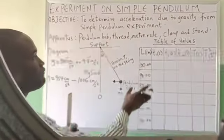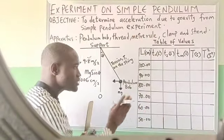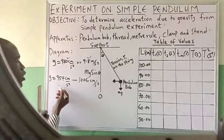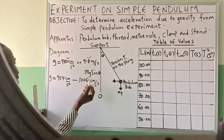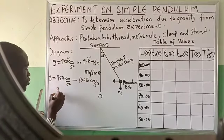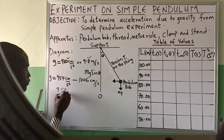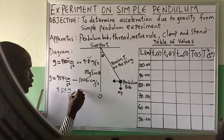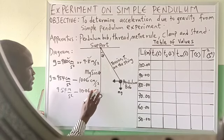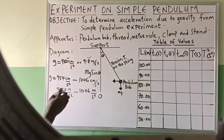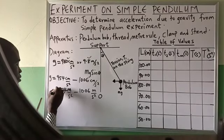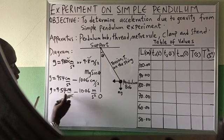That means when you are done performing this experiment, what you should get should fall within this range. In meters per second squared you should get between 9.5 and 10.06 m per second squared. These are the range of values for g, and the answer you get should fall within this range.